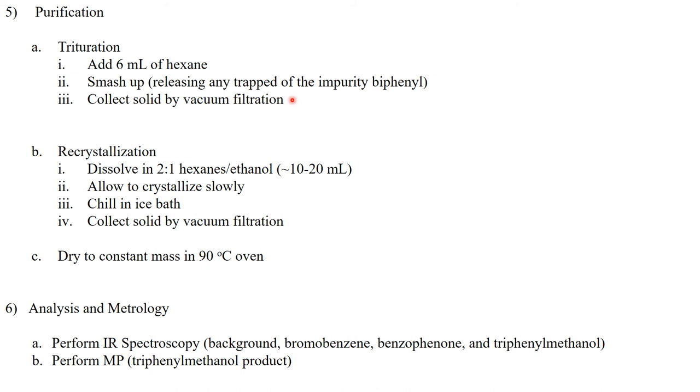It still might not be pure so we're going to recrystallize it. We're going to dissolve it in hot 2 to 1 hexane ethanol mixture, about 10 to 20 milliliters, and then we're going to allow it to slowly crystallize at room temperature. We'll put it in an ice bath and then we'll collect those crystals by vacuum filtration. We're then going to put it in a 90 degrees Celsius oven again to dry it off to remove any of the ethanol or hexanes that still might be there. And then finally we're going to do some analysis.